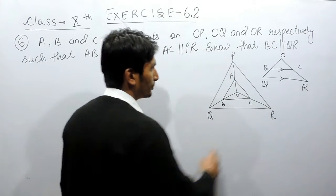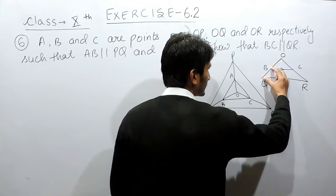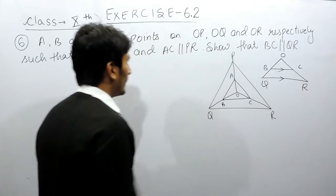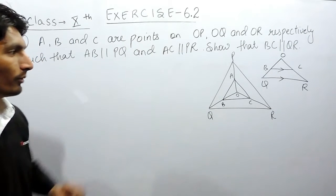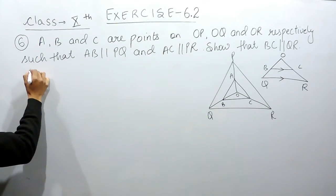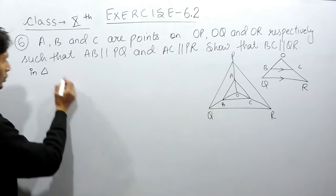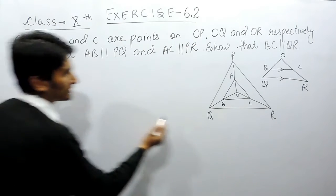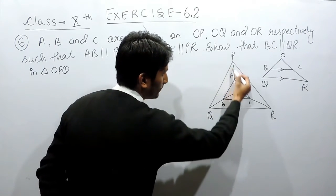So I have to prove that the ratio between OB and BQ is equal to OC and CR. For that I will use these two given pieces of information. First, in triangle OPQ.